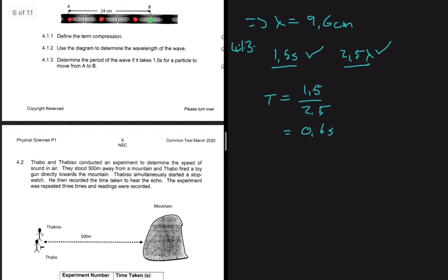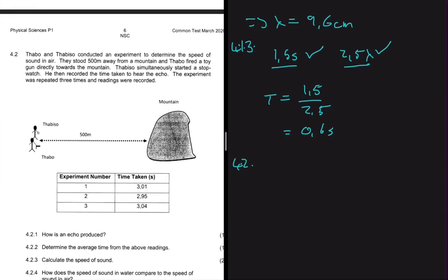For 4.2, two boys conducted an experiment to determine the speed of sound in air. They stood 500 meters from a mountain. One boy fired a toy gun toward the mountain while the other simultaneously started a stopwatch and recorded the time to hear the echo. The experiment was repeated three times.